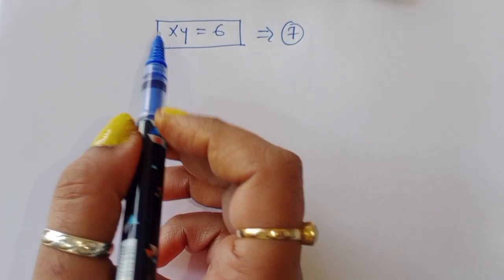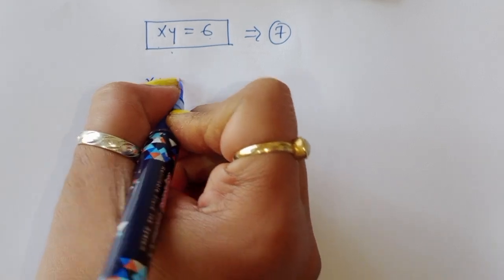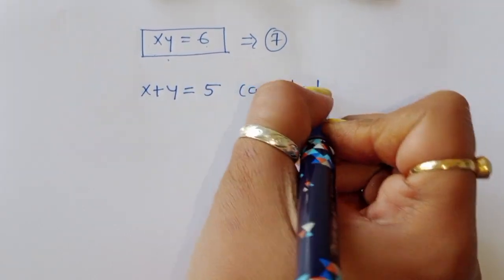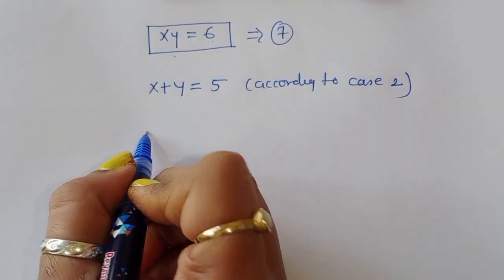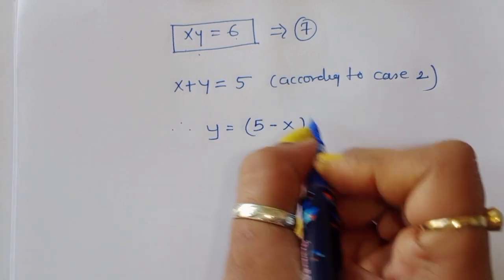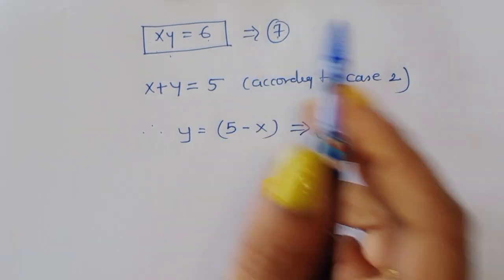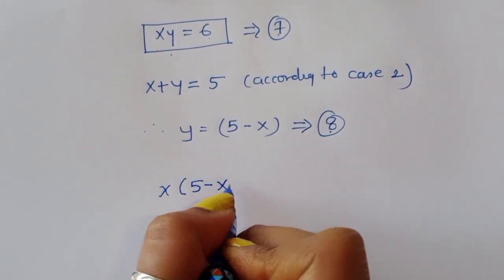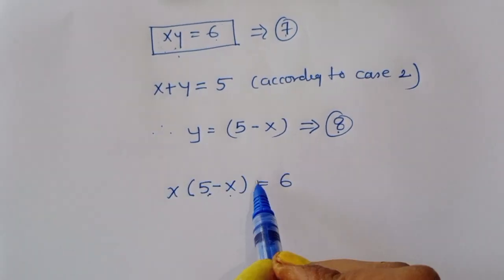We now have xy = 6 (equation 7) and from Case 2, x + y = 5. So y = 5 − x (equation 8). Substituting equation 8 into equation 7: x(5 − x) = 6, which gives 5x − x² = 6.